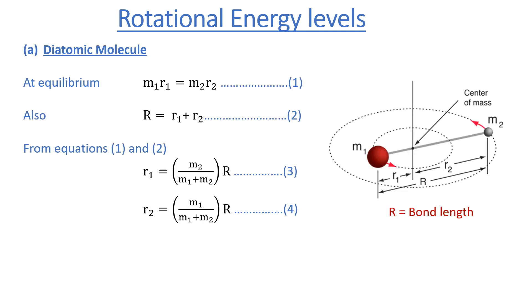In order to explain the rotational spectra, we need to know about the rotational energy levels. To explain the rotational energy level, we first consider the simplest case, which is the diatomic molecule. Here we have a diatomic molecule consisting of mass m1 and mass m2, with a center of mass. The distance of m1 from the center of mass is r1, that of m2 is r2, and capital R is the inter-nuclear distance, also known as the bond length.